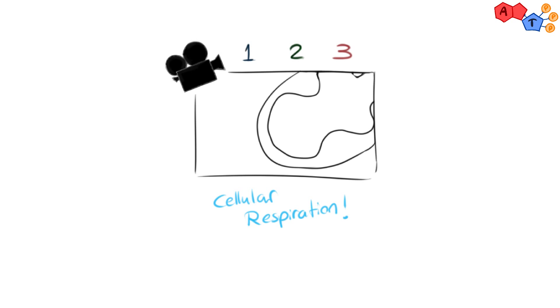Assalamu alaikum, welcome everyone. In a series of three videos, we'll discuss cellular respiration, which is the process that our bodies use to produce energy in the form of ATP in three main stages. In this video, we will be talking about the first stage of cellular respiration, glycolysis.